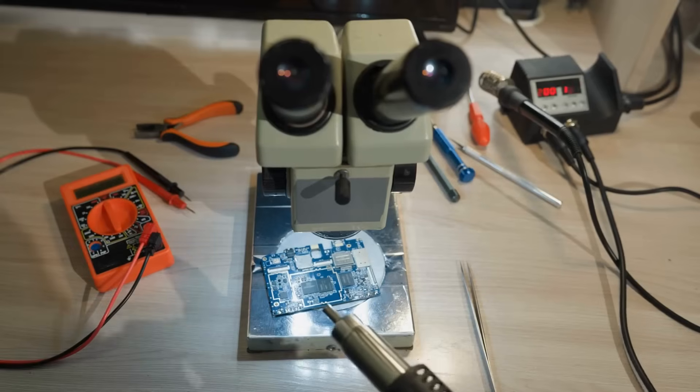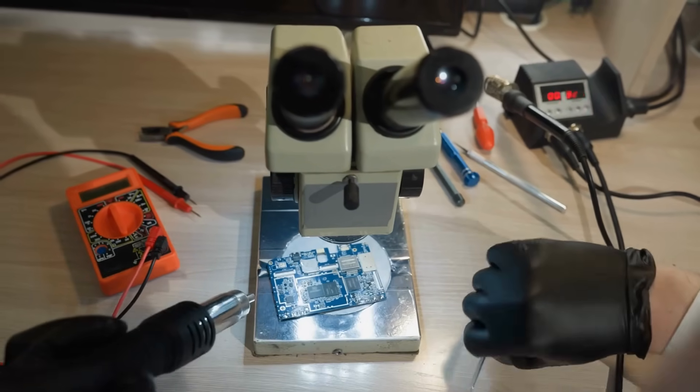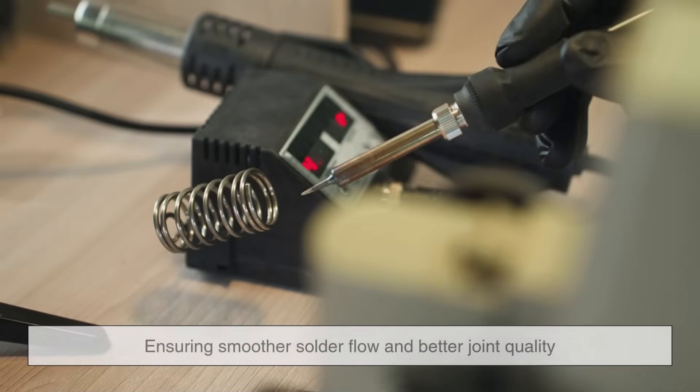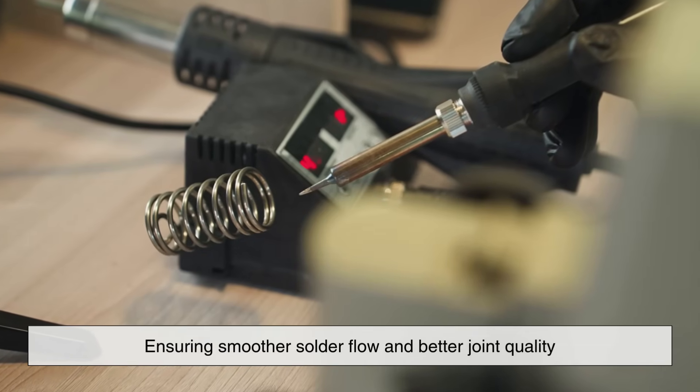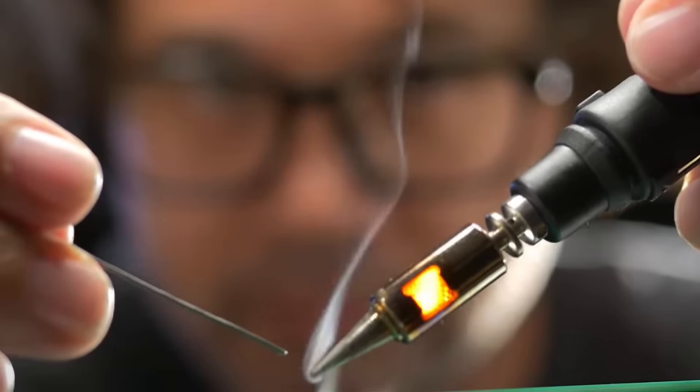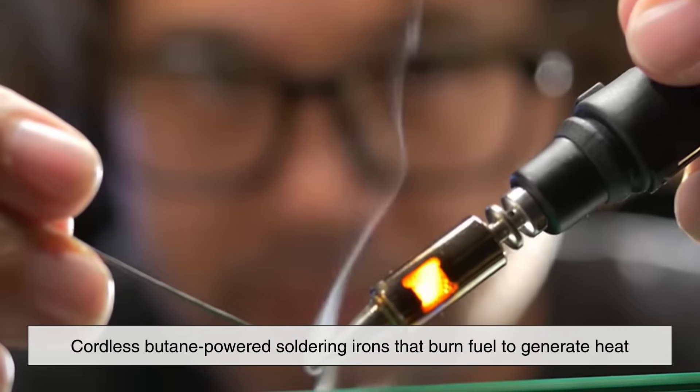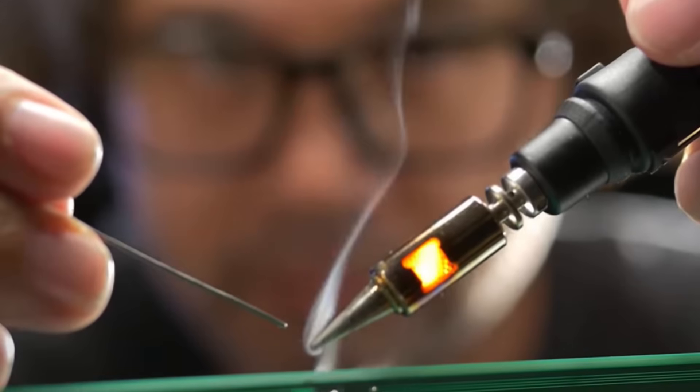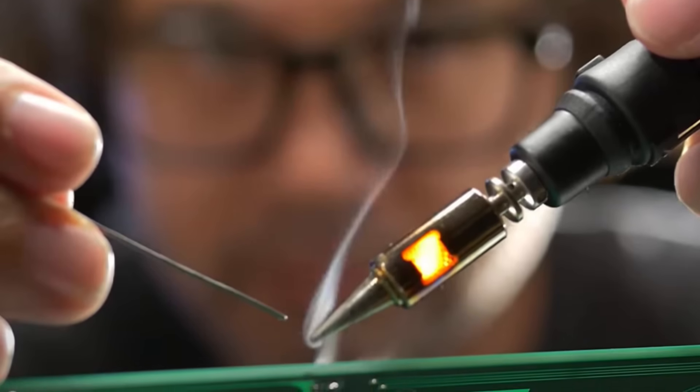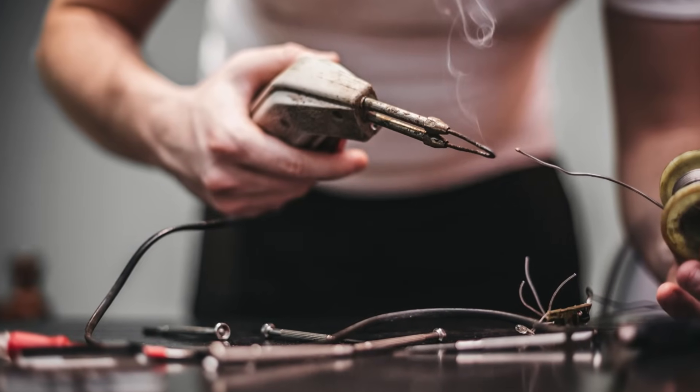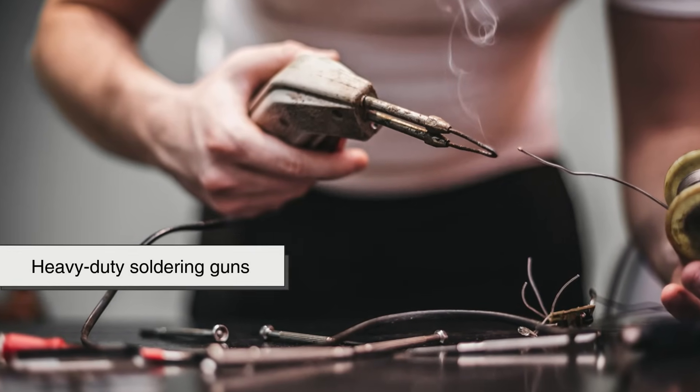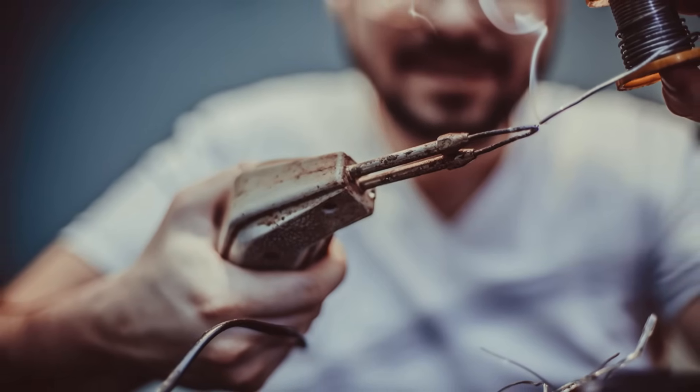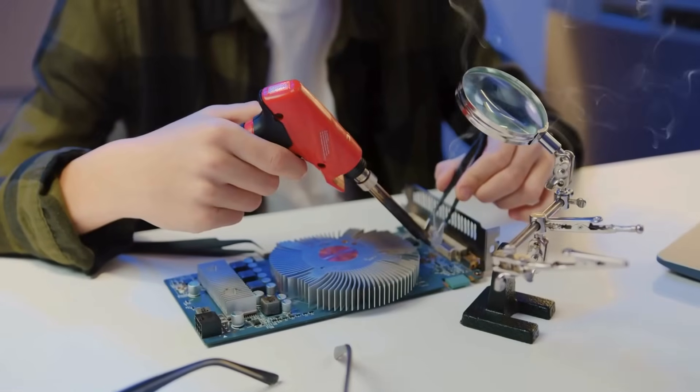These are used by professional technicians because they provide a consistent temperature even when the tip touches cold metal, ensuring smoother solder flow and better joint quality. There are also cordless, butane-powered soldering irons that burn fuel to generate heat, perfect for fieldwork where electricity isn't available. Beyond that, you'll encounter heavy-duty soldering guns, which heat quickly and deliver more power for tasks like thick wires or metal terminals.